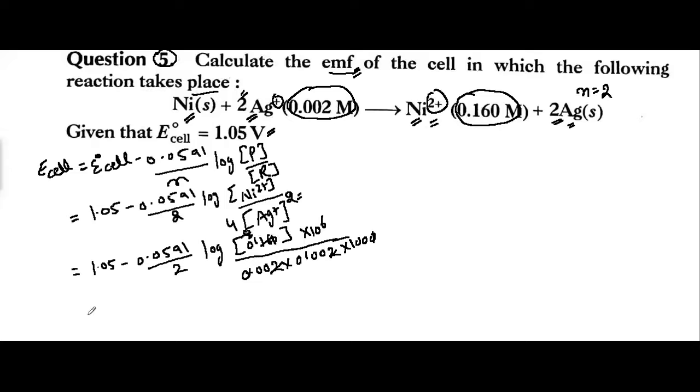So 1.05 minus 0.0591 upon 2 log 4 × 10⁴. Now what do we do with log?